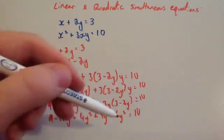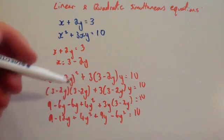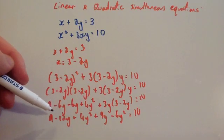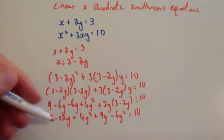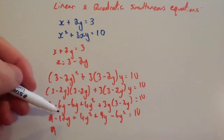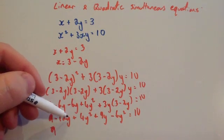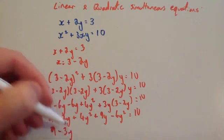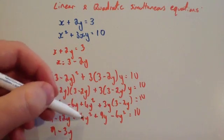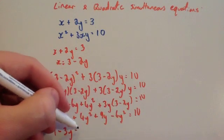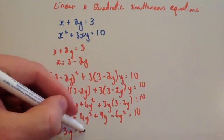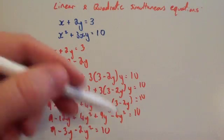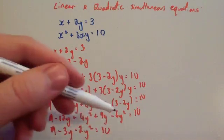Simplifying: 9 minus 12y plus 9y gives minus 3y, and 4y squared minus 6y squared gives minus 2y squared, equals 10. We then rearrange, bringing the 10 across to this side.